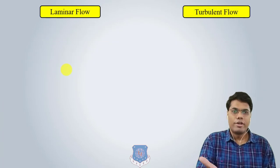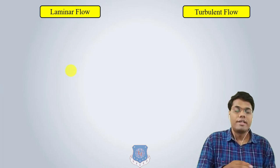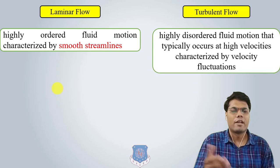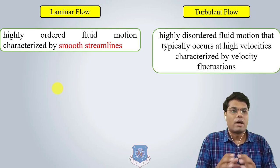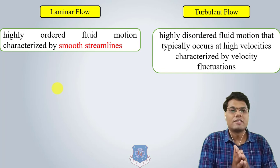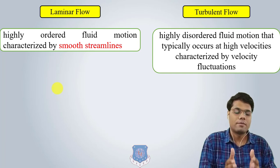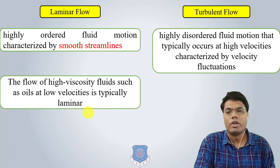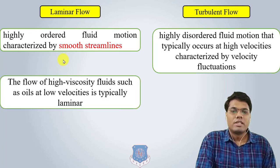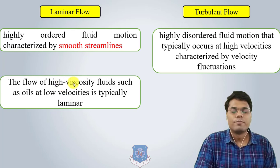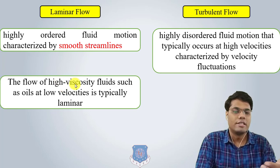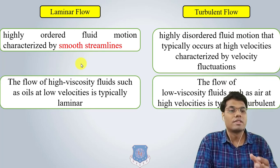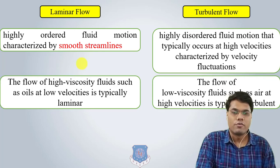Laminar flow and turbulent flow: laminar flow has smooth, constant streamlines. Turbulent flow has highly disordered fluid motion, typically at high velocity, characterized by velocity fluctuations. Laminar flow generally occurs for high-viscosity fluids such as oil at low velocity, while flow of low-viscosity fluid such as air at high velocity generates turbulent flow.